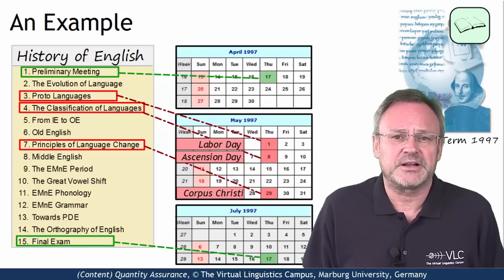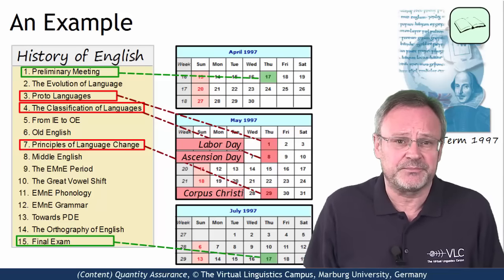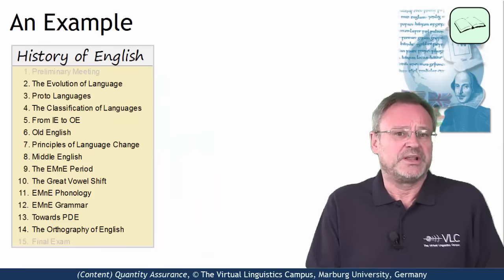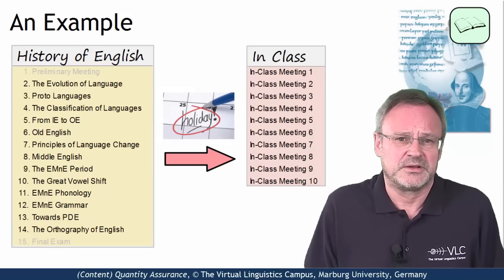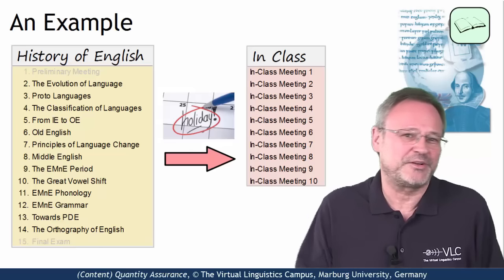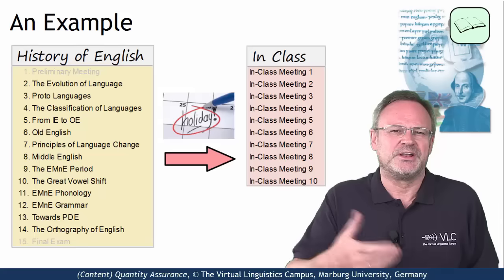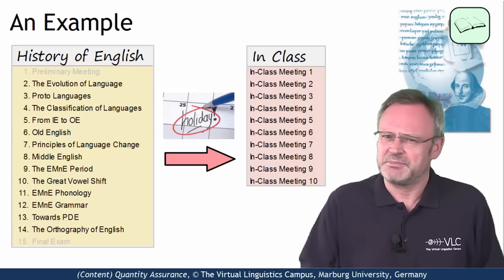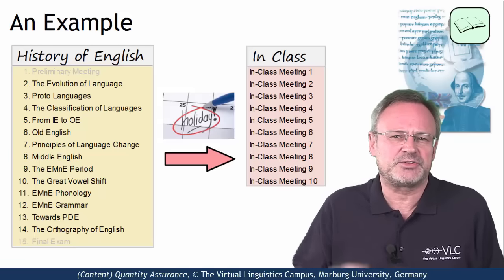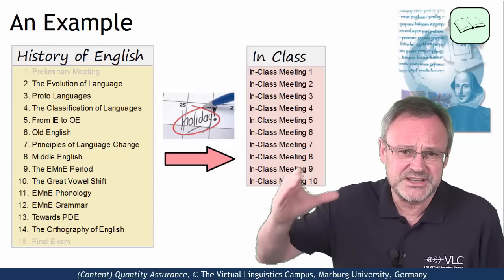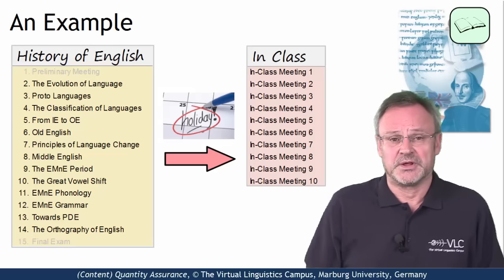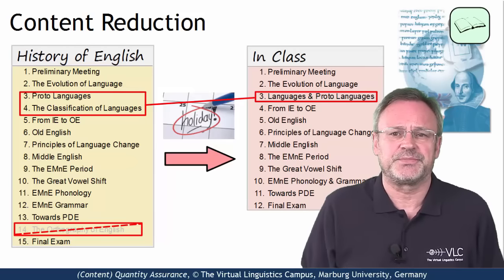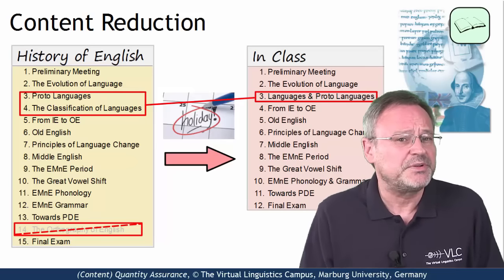The final in-class meeting was used for the final exam. So, instead of having 13 content-related in-class meetings, we only had 10. But I was never absent for any reason. Some of my students might have liked that — fewer in-class meetings means less content to learn. But I didn't like it at all, since I now had to squeeze the content of 13 sessions into 10. An almost impossible enterprise. The consequence was content reduction, and in the end, a simplified final exam.